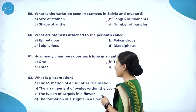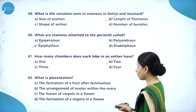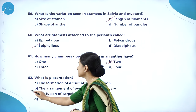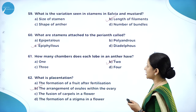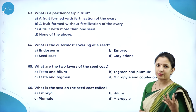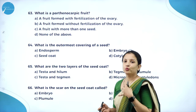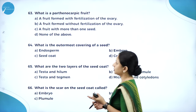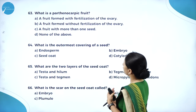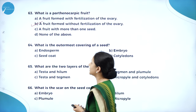What is placentation? It is the arrangement of ovules within the ovary. What is a parthenocarpic fruit? It is a fruit that develops without fertilization — seedless fruits. A fruit formed without fertilization of the ovary — option B is the right answer.